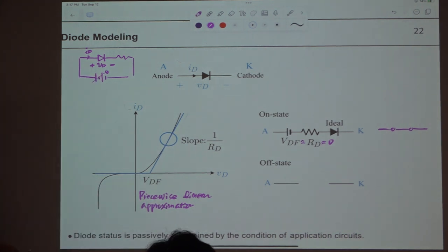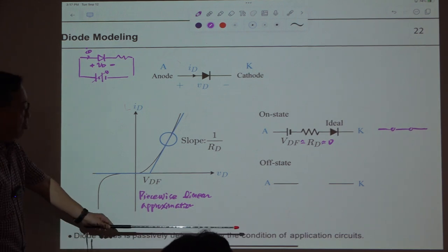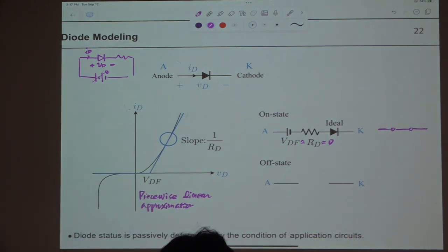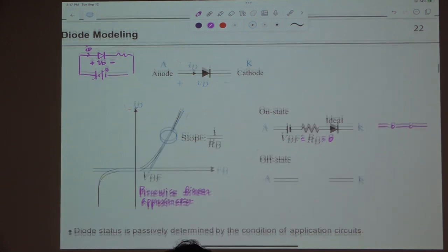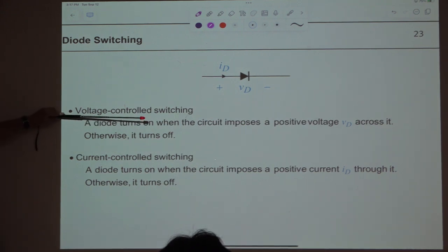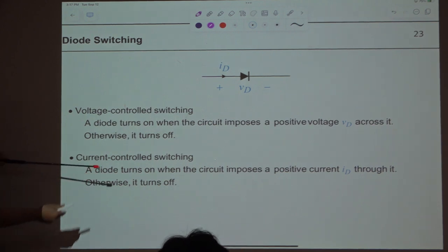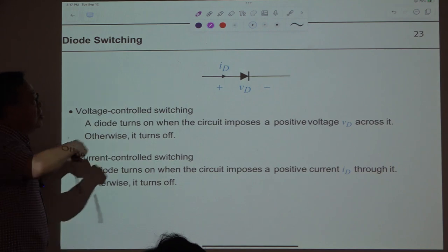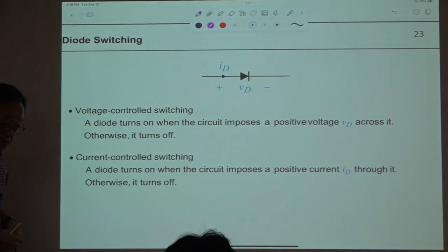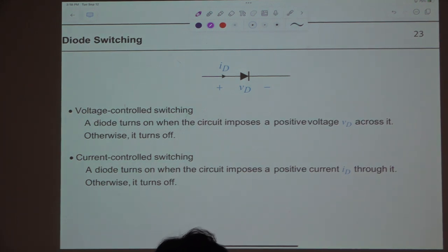The status of the diode is determined by the condition of the application circuit — you are not controlling it directly. There are two ways of interpreting the state of a diode. There are only two possible states: on and off.